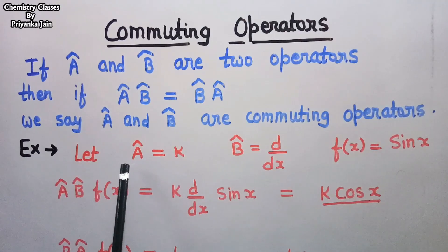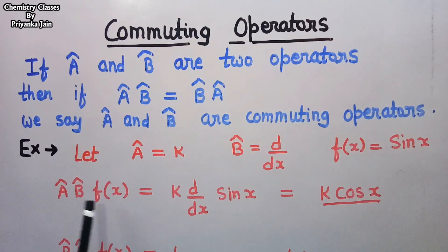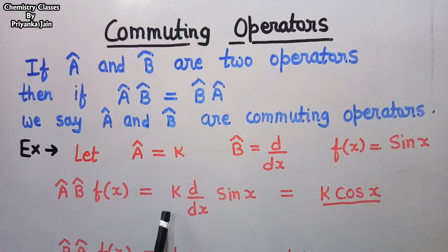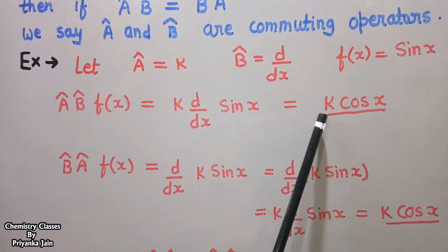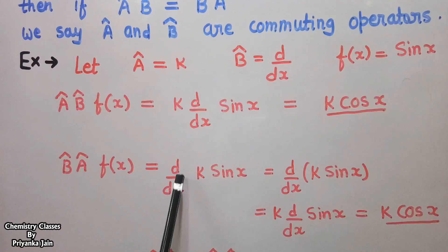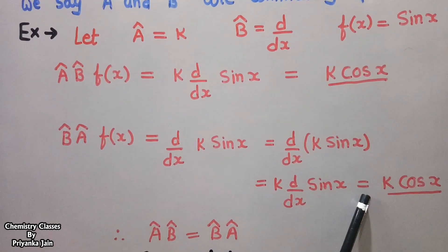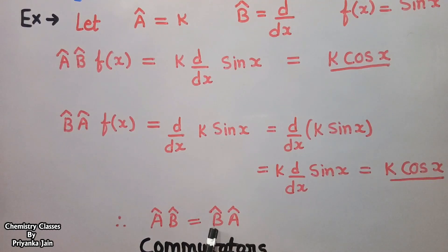For example, if operator A is K, operator B is d/dx, and the function is sin x. Applying the first condition (B then A): K · d/dx · sin x = K cos x. Applying the second condition (A then B): d/dx · K sin x = K cos x. In both conditions we get the same result, so AB = BA, and we can say these two operators are commuting operators.